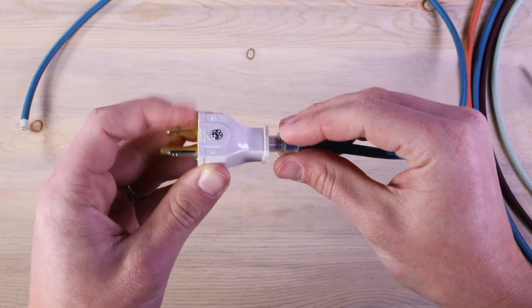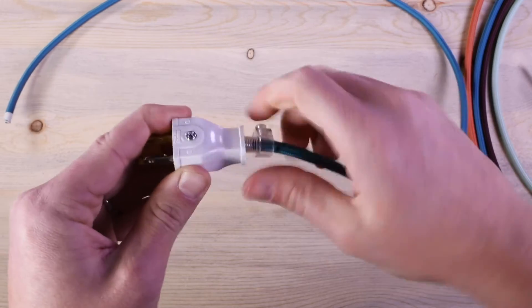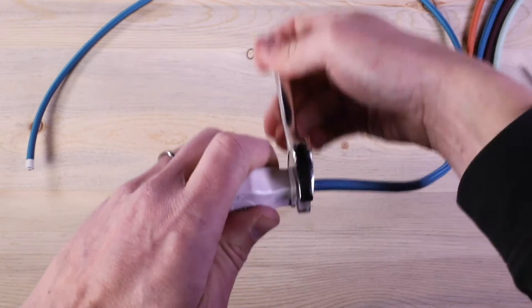And then there's one last step using the cord grip. Thread the cord grip into the back end of the plug. You may need a wrench for the last few twists, ensuring a tight fit.